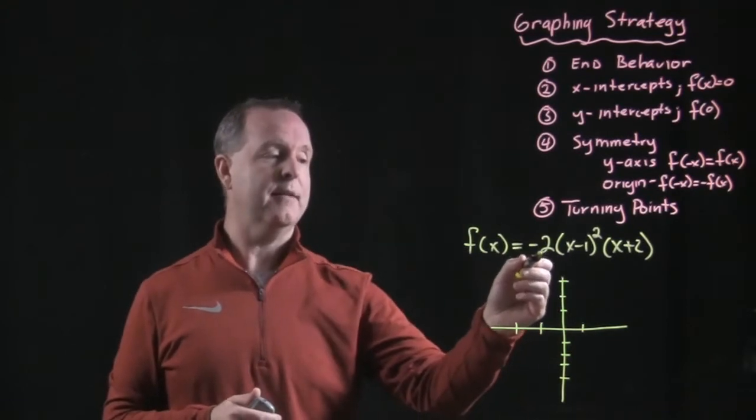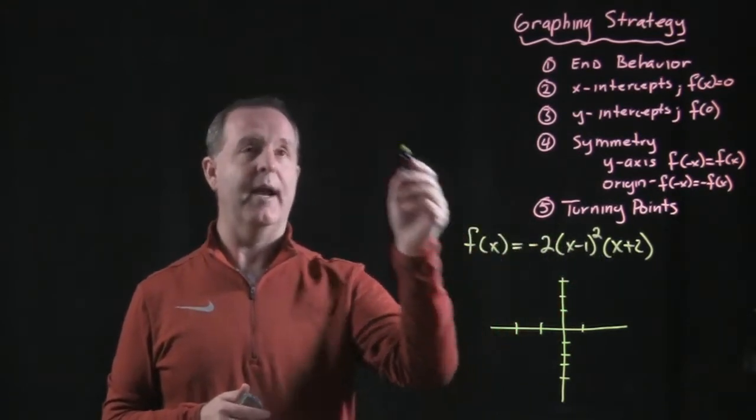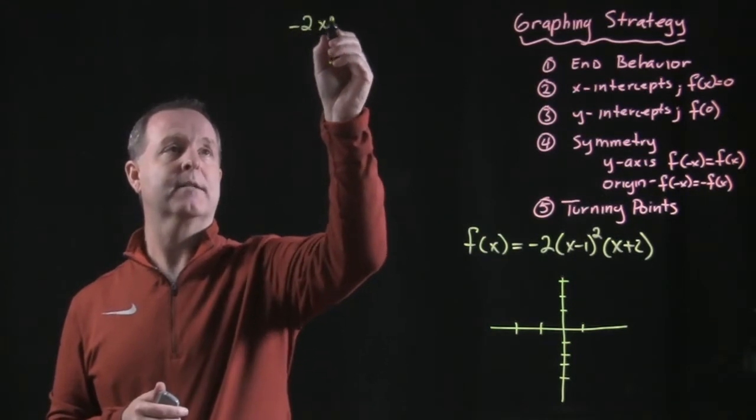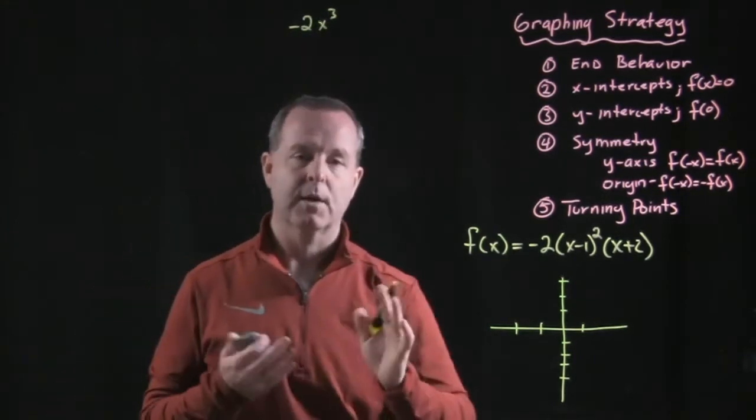So I'm going to get a negative 2x squared times another x. So my leading coefficient is a negative 2x cubed. So what does that tell me?